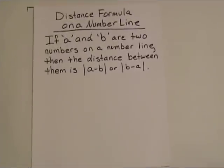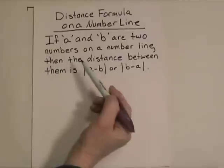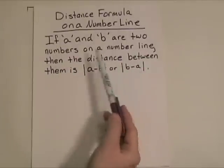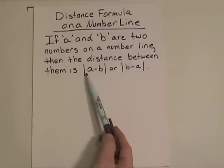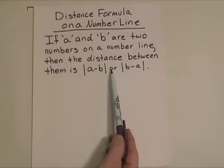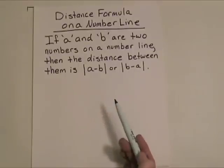More formally, this can be written out like this: the distance formula on a number line. If A and B are any two numbers on a number line, then the distance between them can be written as the absolute value of A minus B, or if you prefer, the absolute value of B minus A.